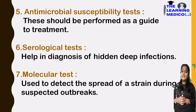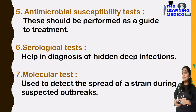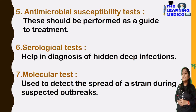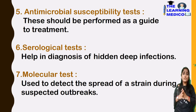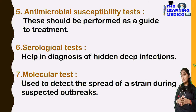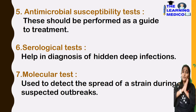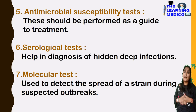Antimicrobial susceptibility testing is performed to guide treatment — to test which antibiotics the bacteria is susceptible to so that proper treatment can be given. Serological tests help in diagnosis of hidden deep infections. Molecular tests are used to detect the spread of strains during outbreaks, similar to how molecular testing was used during the coronavirus outbreak.